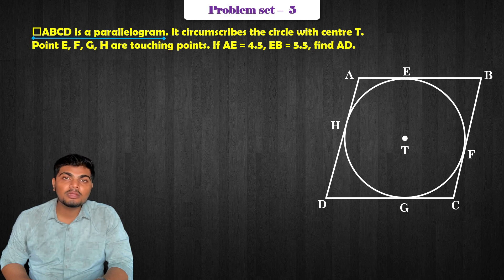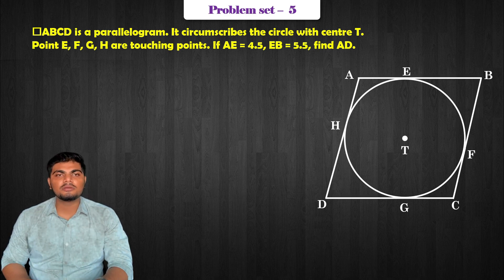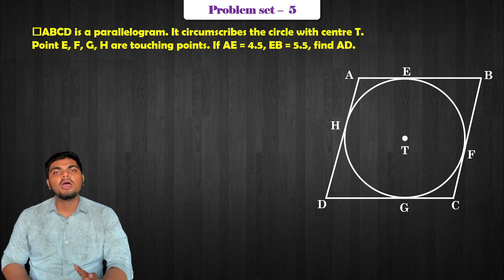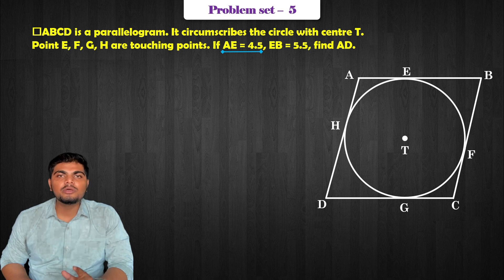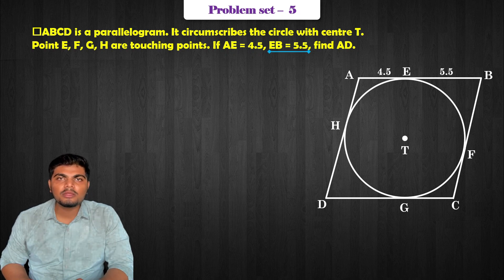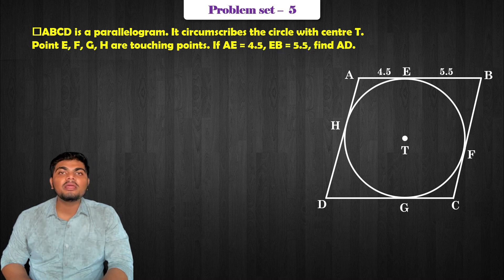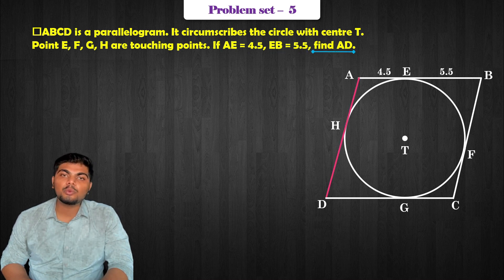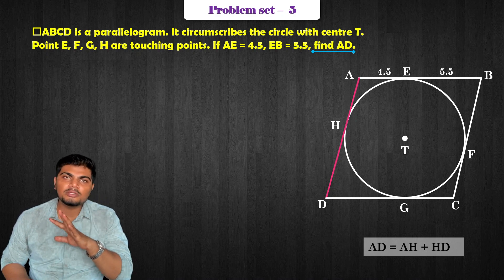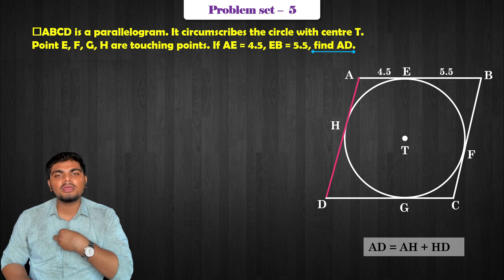Quadrilateral ABCD is a parallelogram. It is inscribed with a circle with center T. The value of EB is 5.5. Find AD.